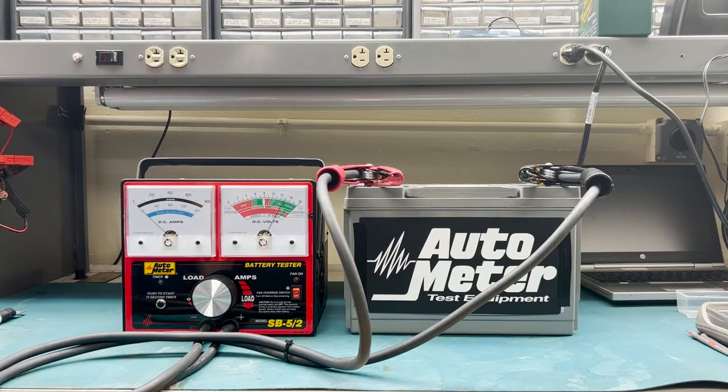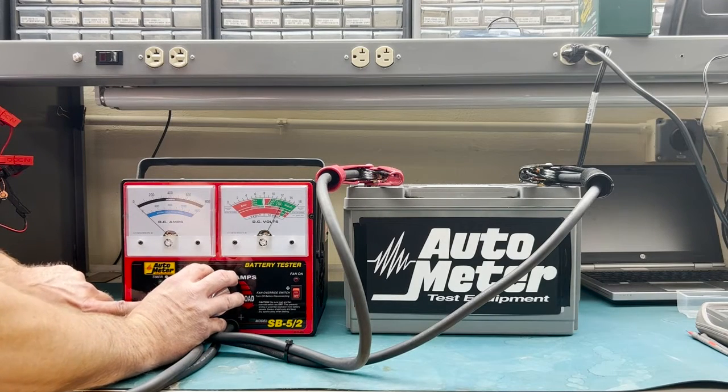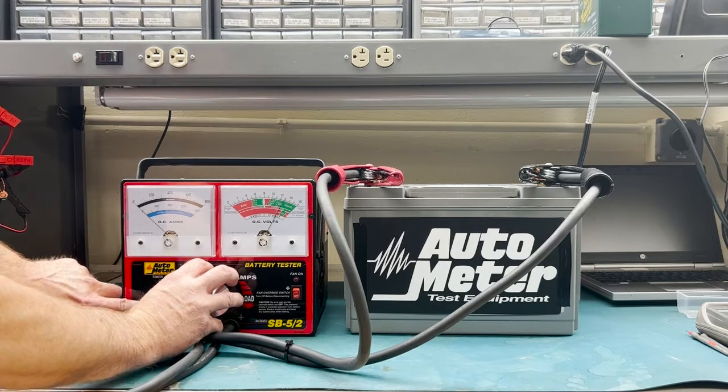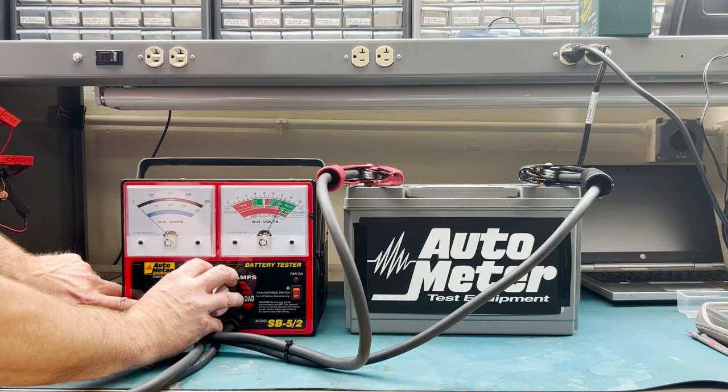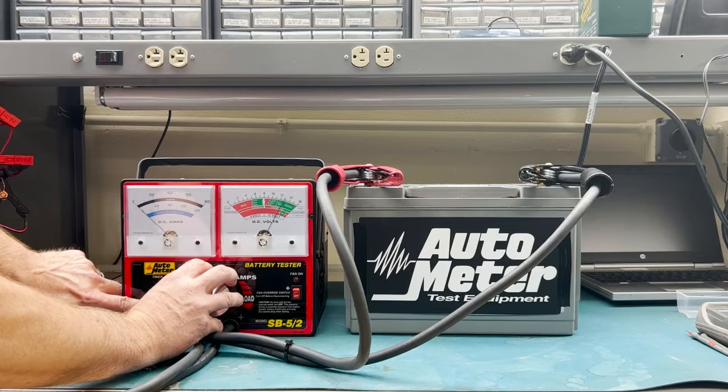So when you go to test your battery, we're going to push the timer and crank this up to half the CCA. This battery is 1150 CCA, which means we're going to go up to 575 amps.